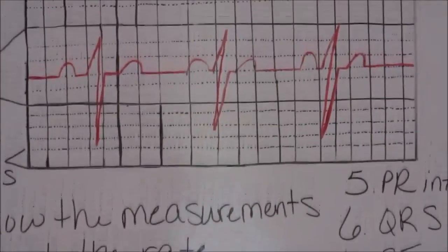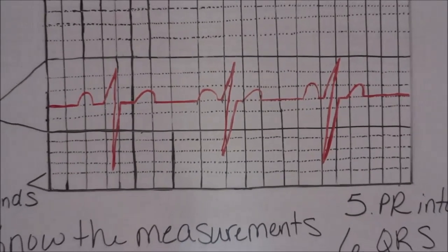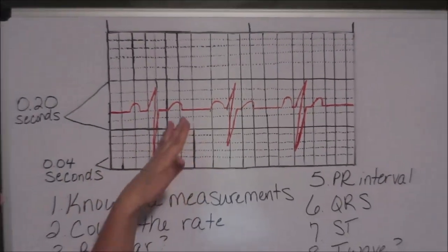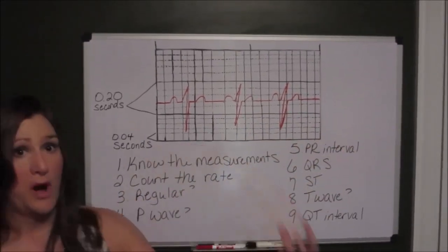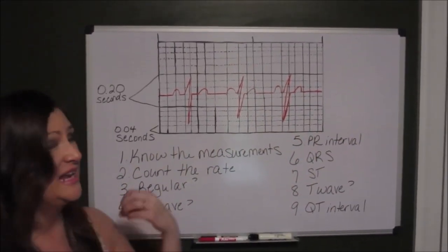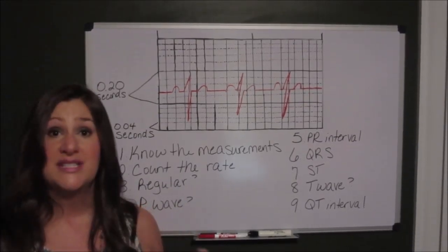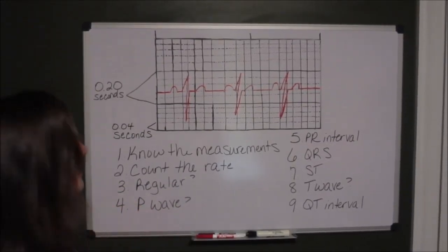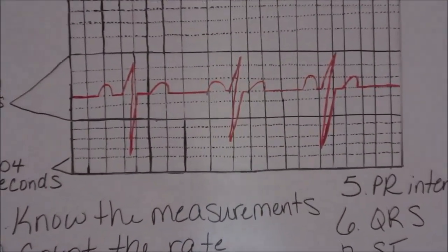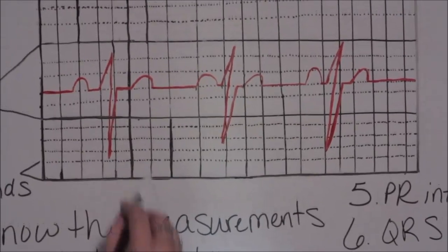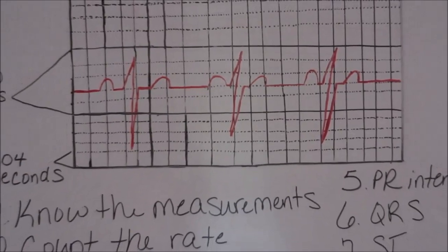The next thing we're going to look at is the T wave itself. Just like with the P wave, we want to make sure that there is a T wave for every complex, that it's upright. Because what we call an inverted T wave is going to indicate some ischemia going on with your patient. For this patient who is in a sinus bradycardia, there is a T wave for every complex and it is upright. So he's good.